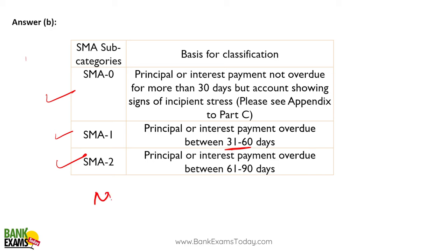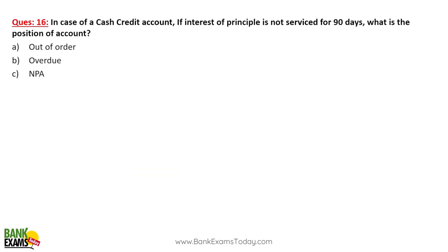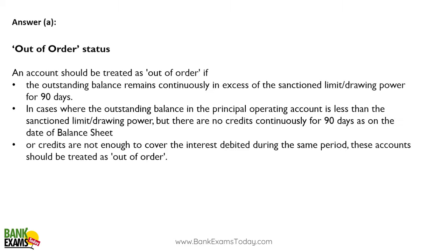After SMA 2 it becomes an NPA, and then the further NPA categories apply. In a cash credit account, if interest or principal is not serviced for 90 days, it becomes out of order. Please take a screenshot — these three conditions are very important.